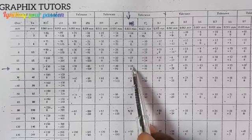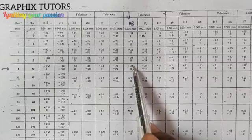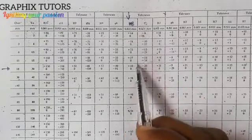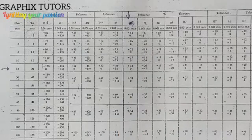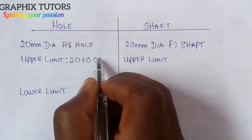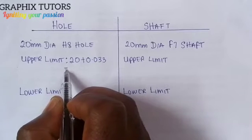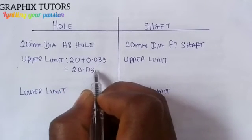To use these values, you multiply the upper limit deviation of 33 by 0.001mm, which gives 0.033mm. Then add this to the nominal diameter: 20 plus 0.033 gives us 20.033mm. So, 20.033mm is the upper limit of the hole.